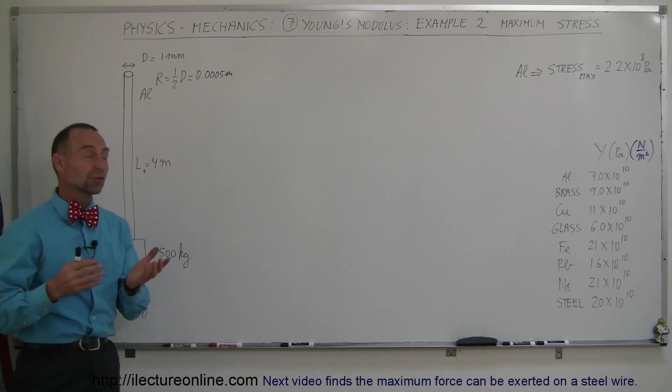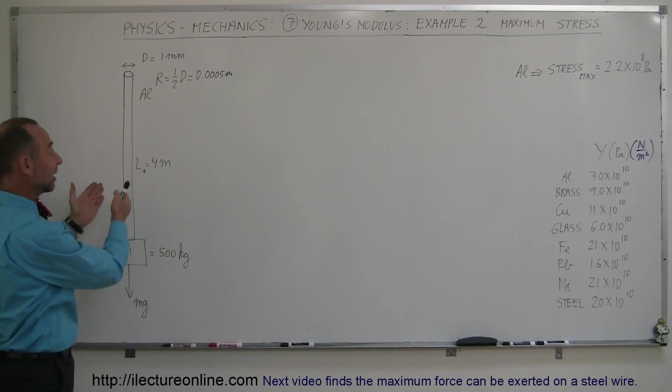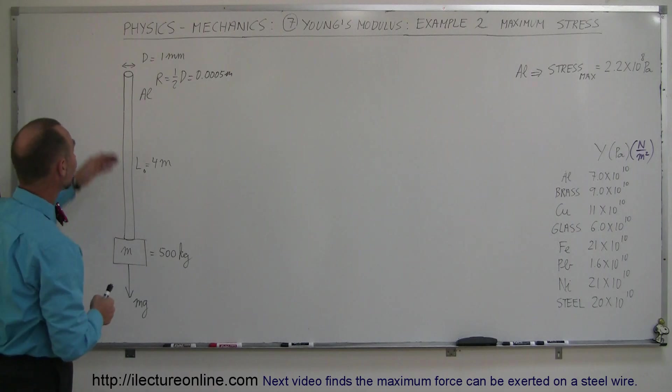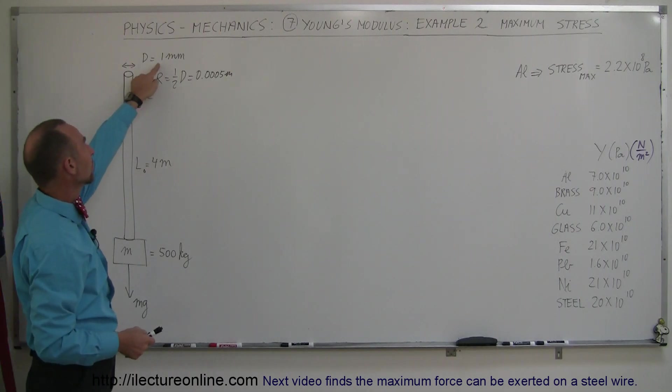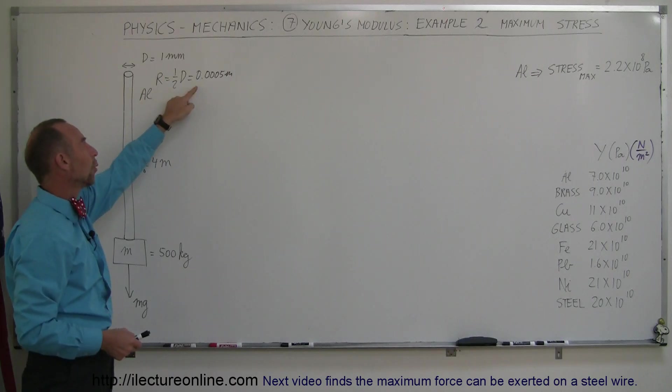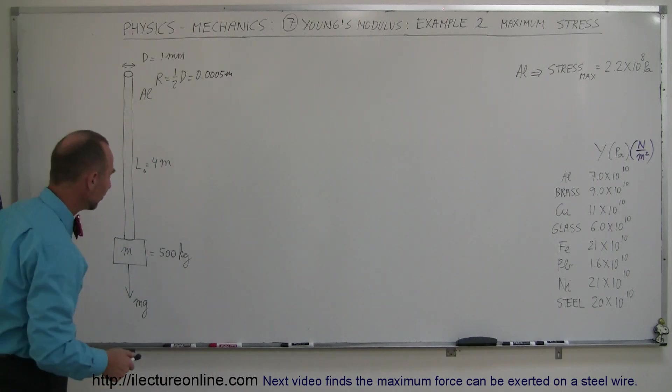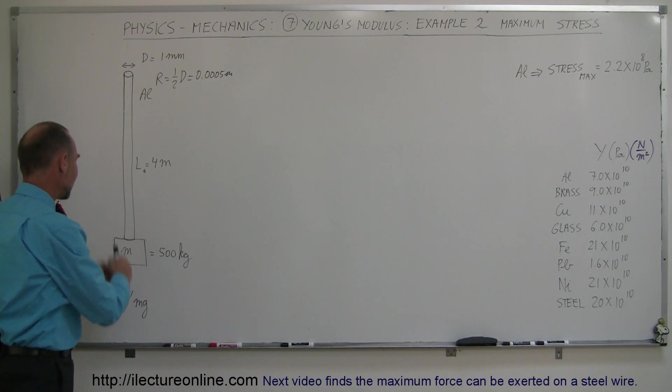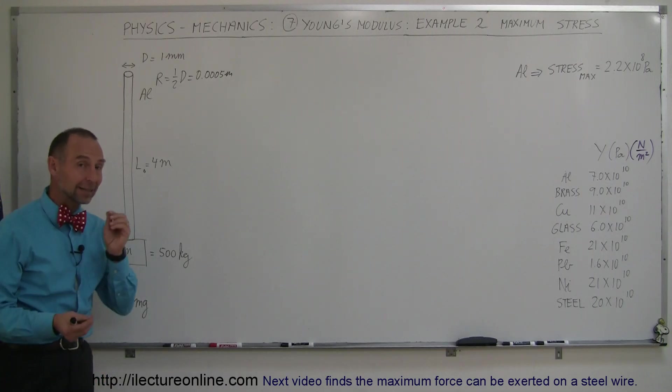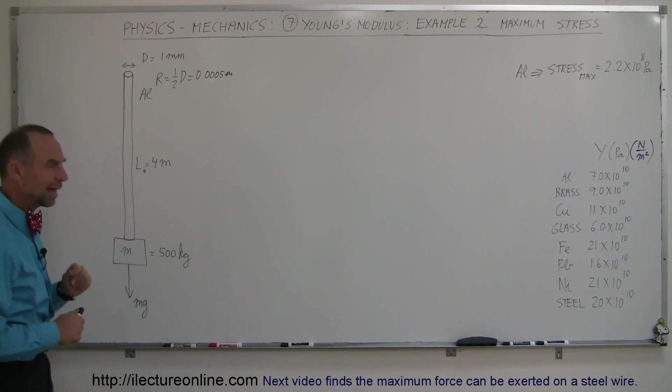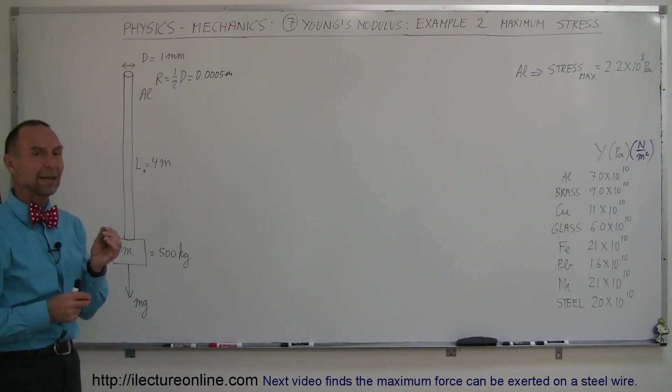In our previous example of Young's Modulus, we had a wire just like this. Matter of fact, it's the exact same drawing. Here's a 4 meter long wire made out of aluminum. It has a diameter of 1 millimeter, which makes it a radius of 0.0005 meters. And we were going to put a mass of 500 kilograms on that, and we calculated the change in the length. Although I did have a suspicion that that wire was probably not strong enough to withstand that.